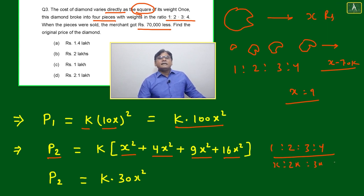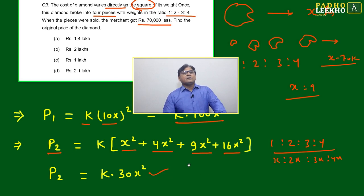Just make the square: x², 4x², 9x², 16x². Total if you add, it will become 30x². Means you can write P₂ = 30kx².